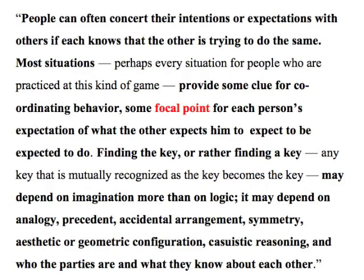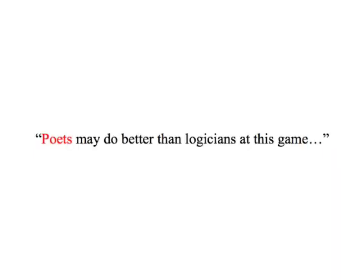Schelling set out to ask people what they would do if faced with these kinds of tacit coordination problems, for which he devised a set of games in the form of questions. He found out that people do manage to coordinate. Here's how he put it: 'People can often concert their intentions or expectations with others if each knows that the other is trying to do the same. Most situations provide some clue for coordinating behavior — some focal point for each person's expectation of what the other expects him to expect to be expected to do. Finding a key may depend on imagination more than on logic. It may depend on analogy, precedent, accidental arrangement, symmetry, static or geometric configuration, casuistic reasoning, and who the parties are and what they know about each other.' He concludes that poets may do better than logicians at this game.